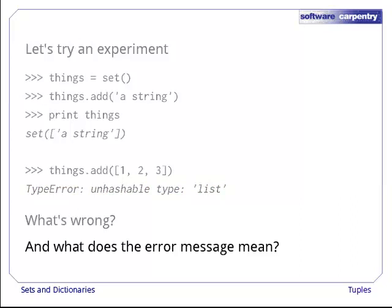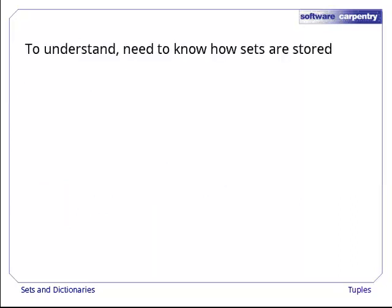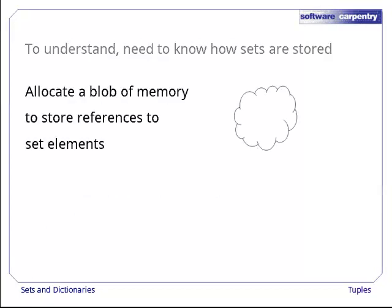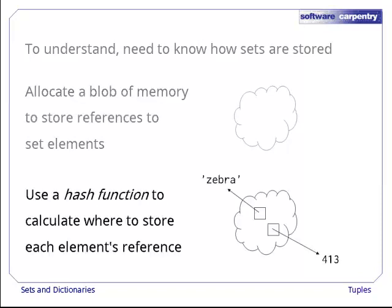And what does that word 'unhashable' mean? In order to understand what's going on, we have to take a look at how sets are stored in a computer's memory. When you create a set, the computer allocates a blob of memory to store references to the set's elements. When you add something to the set or try to look something up, the computer uses a hash function to figure out where to look. A hash function is any function that turns data values into a single integer that can be used as an index into another data structure.